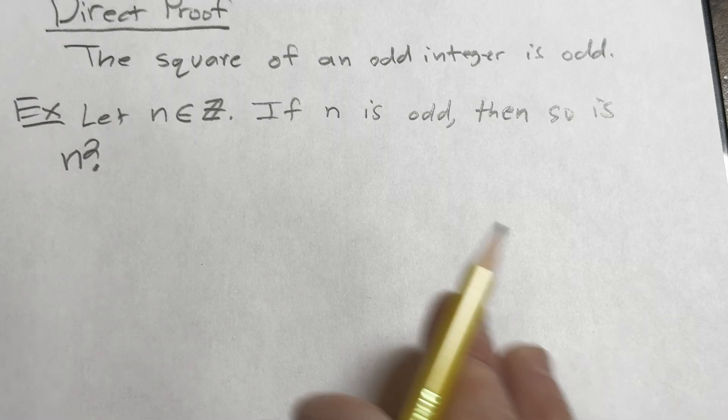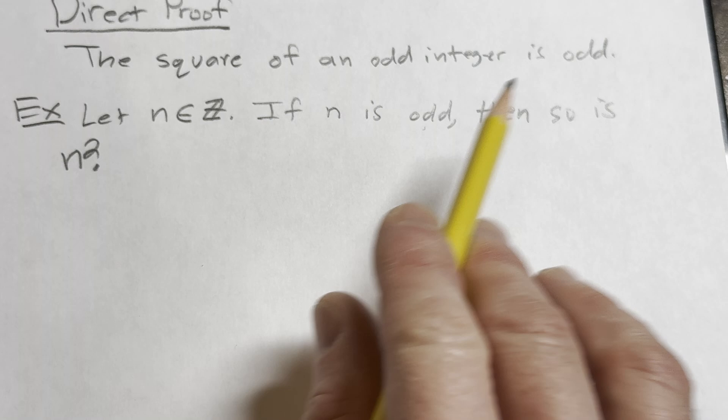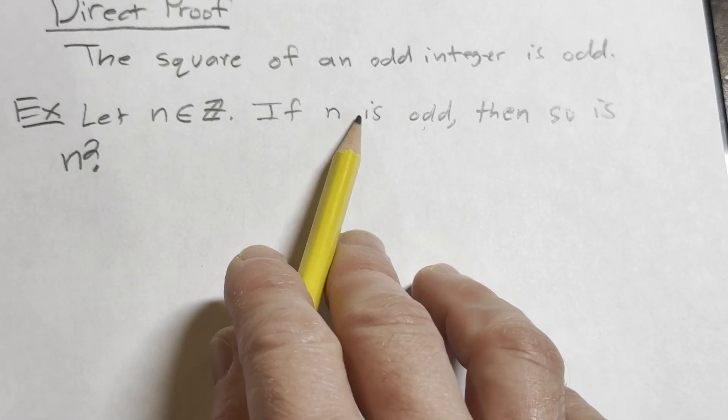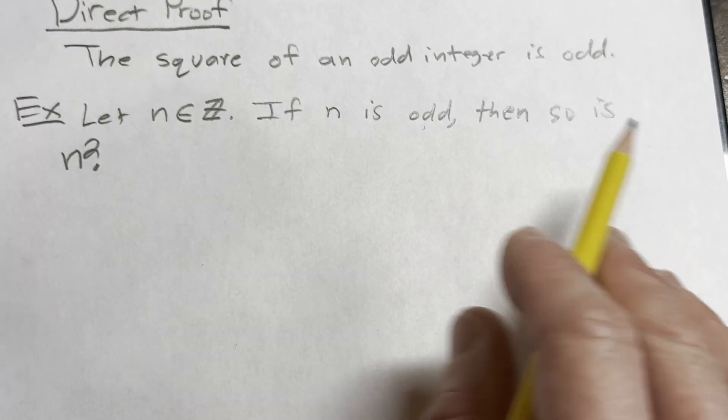Okay, that's the statement that we are going to prove. And that's basically the same thing as saying that the square of an odd integer is odd. Because if n is odd, then so is n squared. So I can also just say that n squared is odd. Same thing.